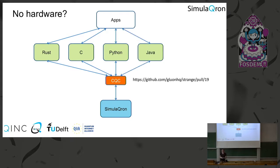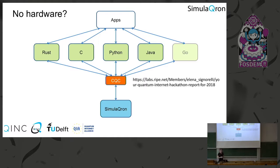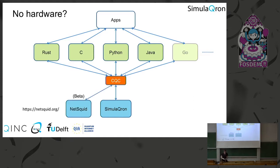We also have libraries in C and Rust. What's nice is that a community can develop libraries in other languages — there's now a Java implementation from Johan Voss at Gluon HQ as an open pull request for their simulator Strange, and there was a Go implementation from one of our hackathons. Beyond Simulacron, CQC can also talk to other simulators that understand it, such as NetSquid — a discrete event simulator for quantum networks developed at Qtech, the world's first of its kind, currently in beta.